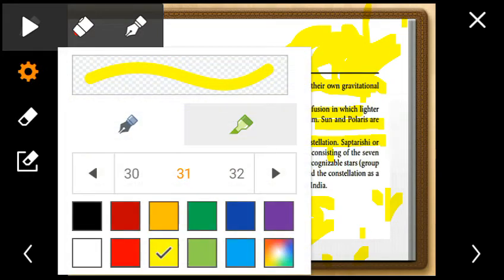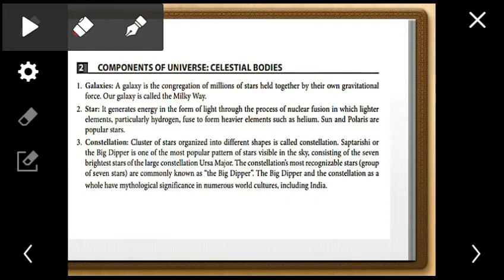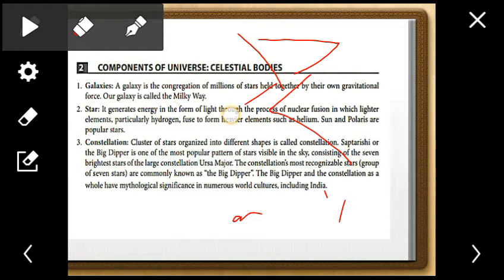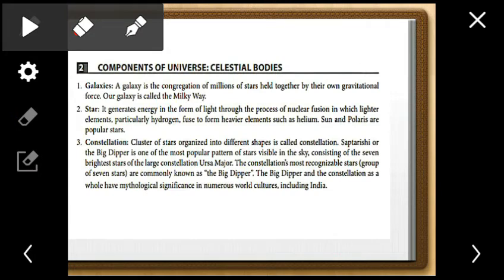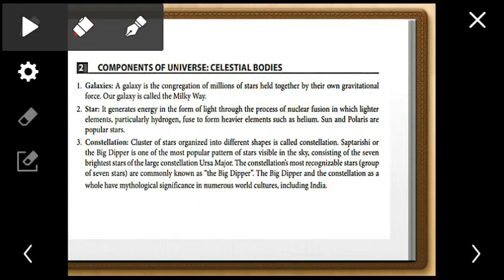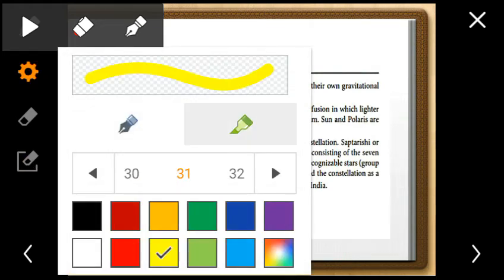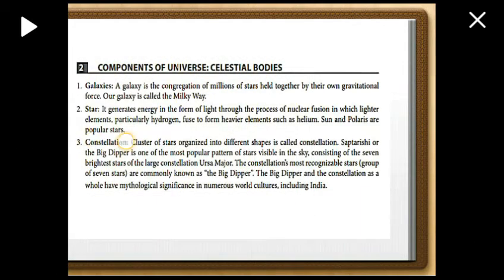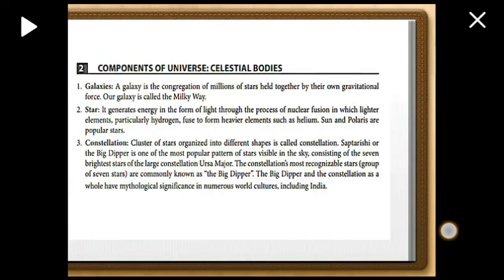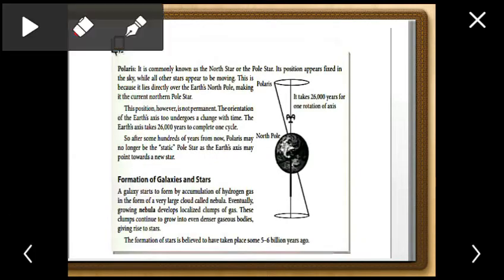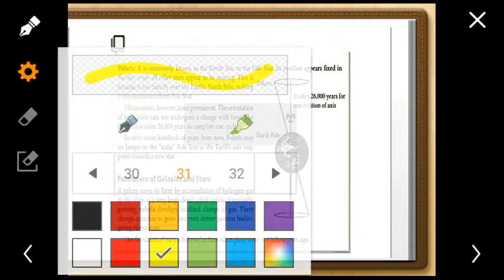A constellation is a group of stars arranged into different shapes. For example, you may have heard of Saptarishi and various nakshatras — these are constellations. The nakshatras keep changing and are said to determine human actions. These star patterns visible in the sky are what we call constellations.